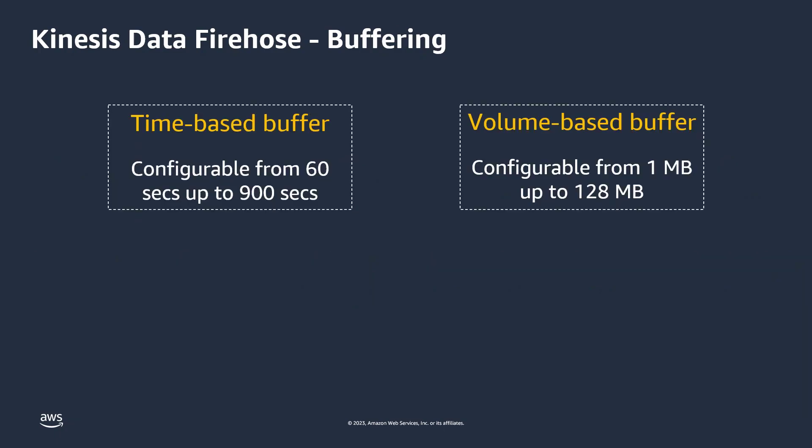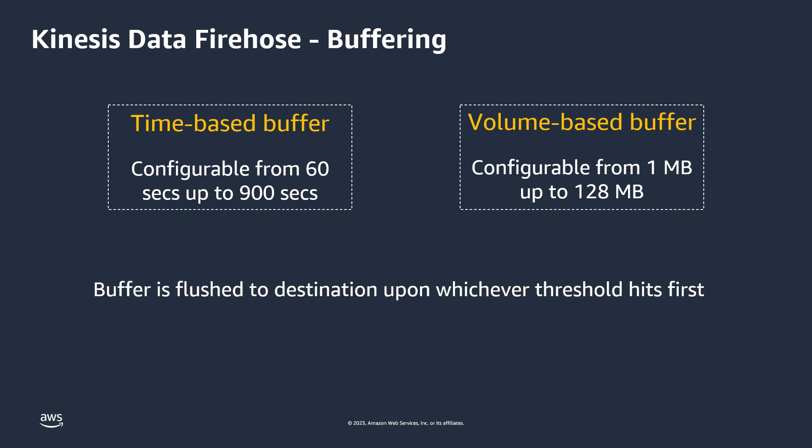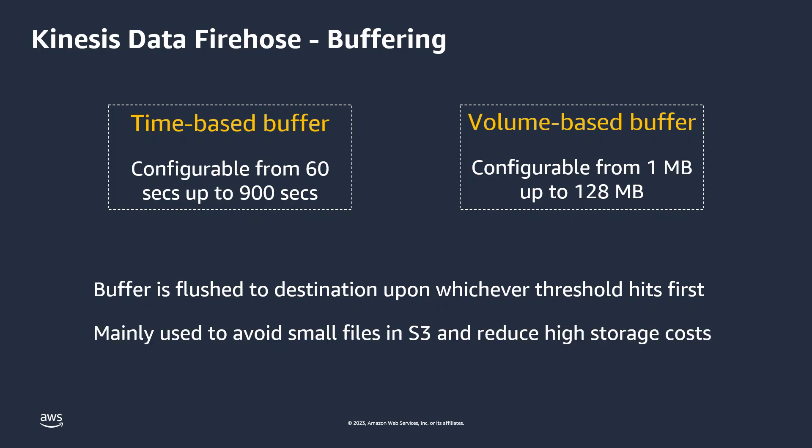Amazon Kinesis Data Firehose buffers incoming streaming data for a specified period of time or to a specified volume before delivering it to its destination. The buffer is flushed to the destination upon whichever threshold is hit first. Buffering helps to avoid small files on Amazon S3 and reduce high storage costs.